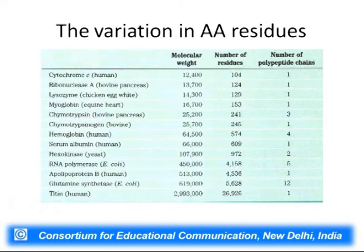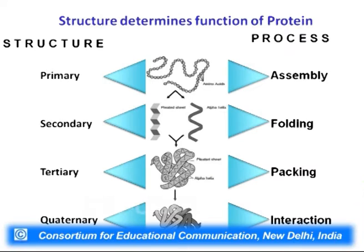There is quite a variation in amino acid residues that result in a protein, and you need not have a set number of amino acids for a functional protein. The smallest we start with is cytochrome C, up to titin which is the largest in terms of number of amino acid residues. Most importantly, the structure will determine what function the protein takes up, with the primary structure being the most important determinant.